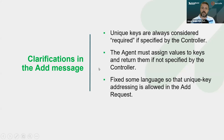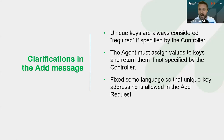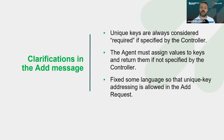There are also a couple of clarifications on the way the Add message works. We have the concept of required parameters for Set and Add. If the controller marks something as required and it can't be set, that causes the object creation to fail. Unique keys are always considered required — that doesn't mean the controller has to provide them, it just means if the controller doesn't provide them, the agent must provide values to those keys and return them. We fixed the language in Add so that you can use unique key addressing when using the Add request — it just has to only match one object.